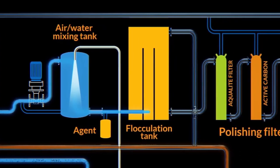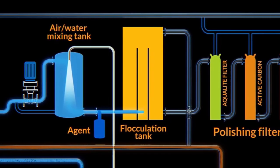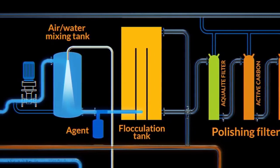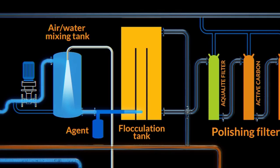After the air-water mixing tank, the flocculation agent is dosed into the aerated bilge water. This will start the flocculation process, forming particles larger than 100 nanometers.